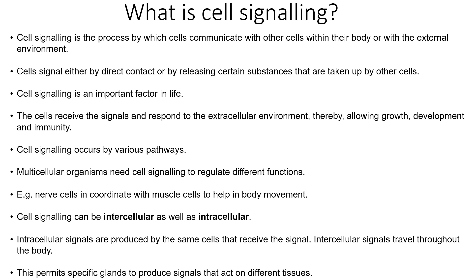To give an example, nerve cells can coordinate with muscle cells to help in body movement. Cell signaling can be either intracellular or extracellular. Intracellular signals are produced by the same cells that receive the signals. In comparison, extracellular signals travel throughout the body, which permits specific glands to produce signals that act on different tissues.